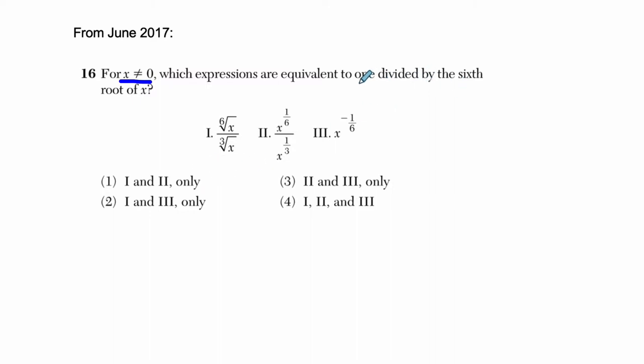Then, look at this. This is difficult for many people. 1 divided by the 6th root of x. This is not 1 divided by x to the 6th, right? It's 1 divided by the 6th root of x, which by definition is 1 over x to the 1/6th power.